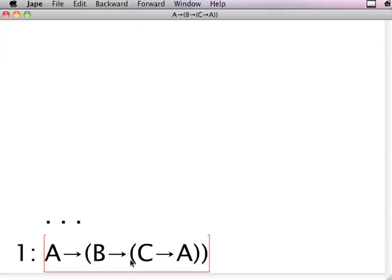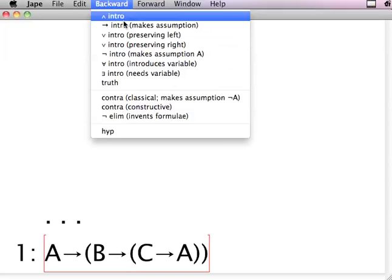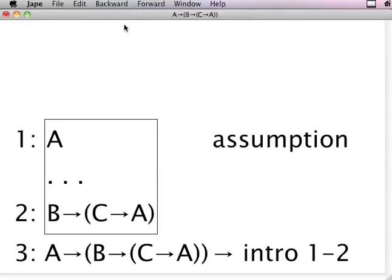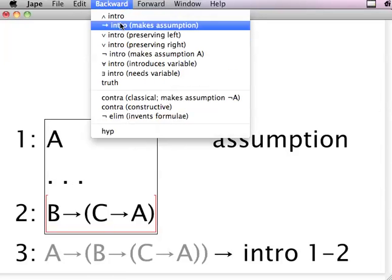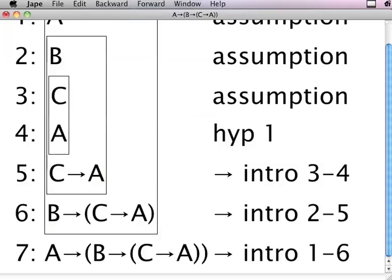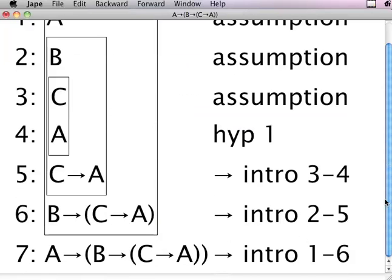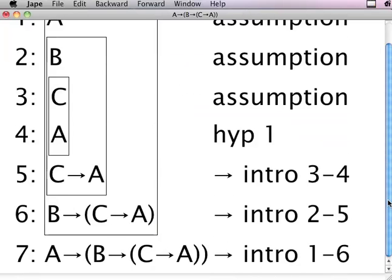But here we are doing it formally by box proof. So we go backwards, do an implication introduction. Simply draw a box on top of implication and pull up the A, and this becomes a target. Repeat. Repeat. We do an implication introduction, and this, again, the automatic thing to do when you want to justify an implication is to do an implication introduction. And you can see now the proof is actually complete, and it's also annotated.